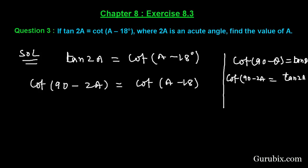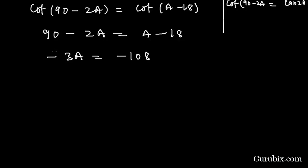This cot and cot can be cancelled out. Then we have 90° - 2A equals A - 18°. This means -3A equals -108°. Minus and minus will be cancelled out. A equals 108° over 3.